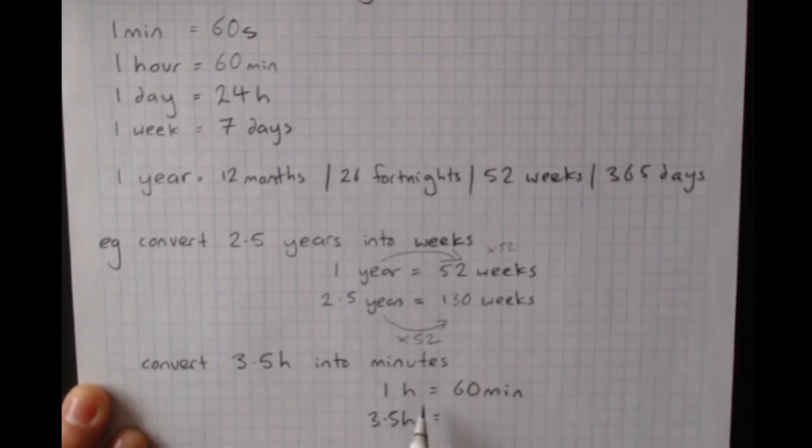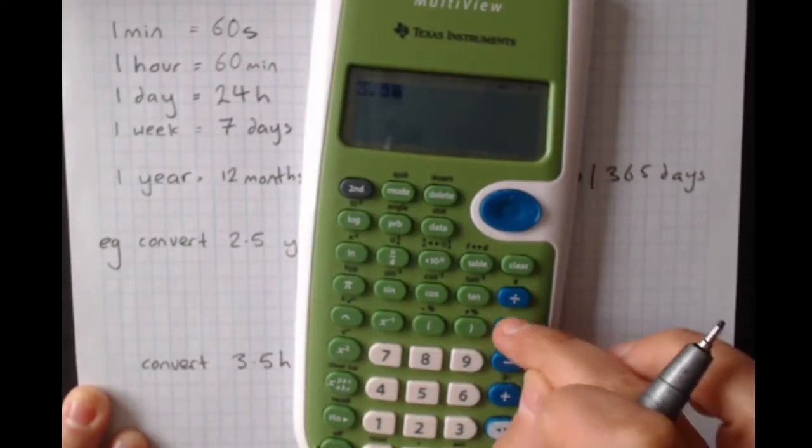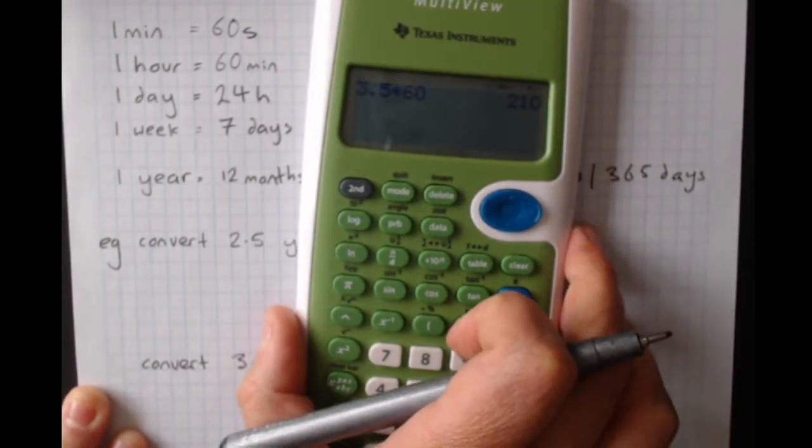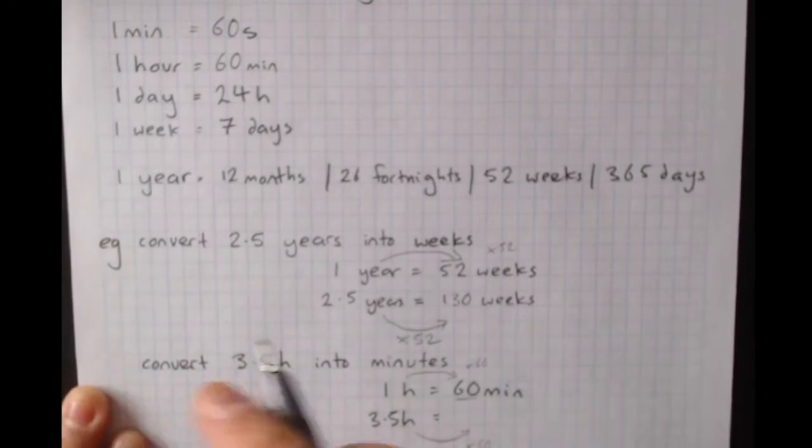Then I want to go from the side where I know stuff to the side where I don't know stuff. So I'm going this way. How did I get from one to 60? Well, I multiplied by 60. So I need to do times 60 here as well. 3.5 times 60, 210 minutes.